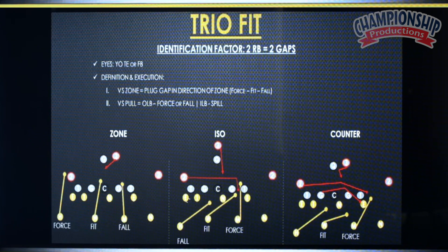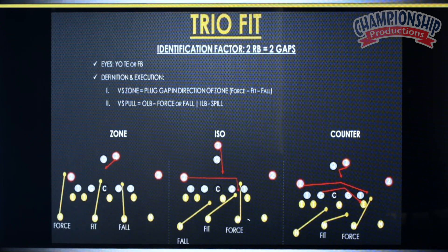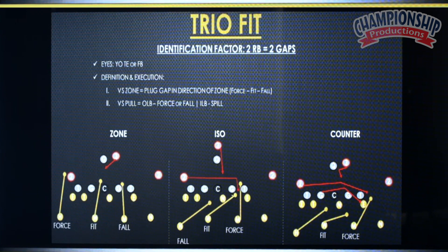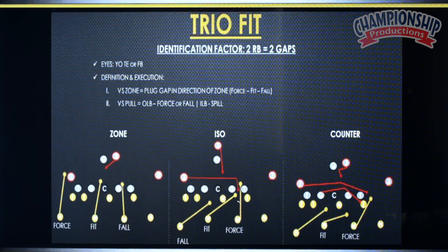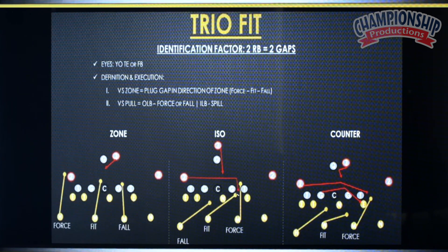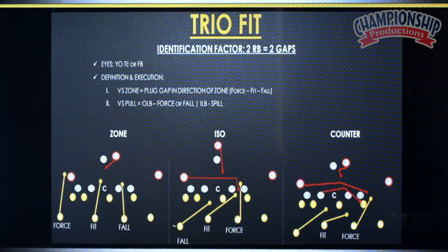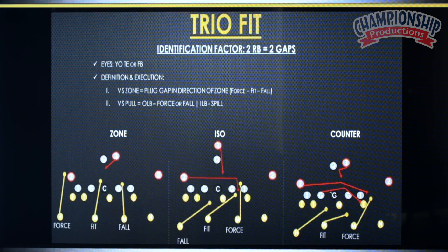If we get ISO, now we have three for two. Our Mike becomes our force defender off the ISO. The Will becomes a fit — he has to fit inside of the yo tight end. And our hustler, who is our boundary safety, will fit and fall backside into that A gap.